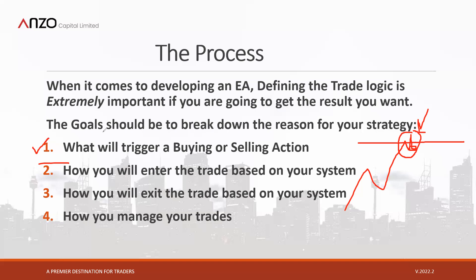Once you've defined the trigger — for example, 'I look to buy when the 10-period moving average crosses above the 20-period moving average, and I look to sell when the 10-period moving average crosses below the 20-period moving average' — that's your trigger. Then the next point is how do you enter the trade based on your system. For a pin bar trader, your rules might be: at the close of the candle, enter immediately. Or it could be: wait for a retest of the 50% or 61.8% Fibonacci retracement, then look to sell.